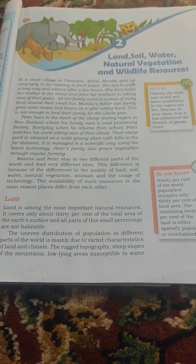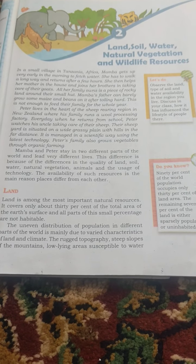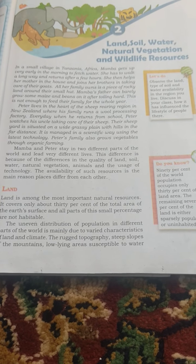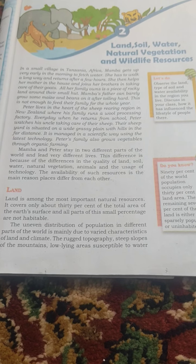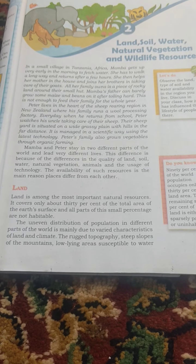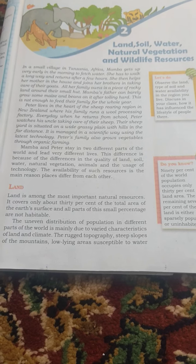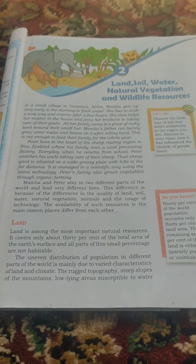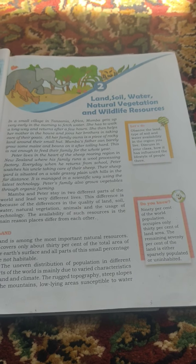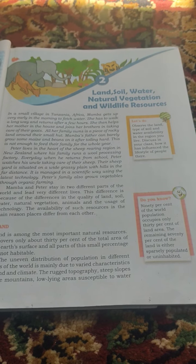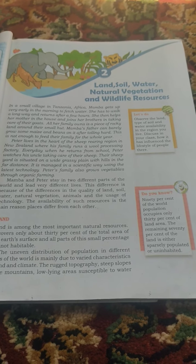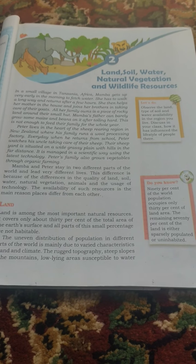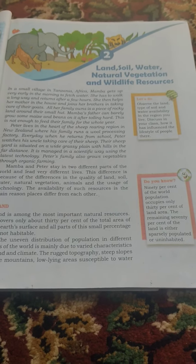Peter lives in a sheep rearing region in New Zealand. His family runs wool processing. Every day when he returns from school, Peter watches his uncle taking care of their sheep. Their sheep yard is situated in a wide grassland with hills in the far distance. It is managed in a scientific way using the latest technology. Peter's family also grows vegetables through organic farming.